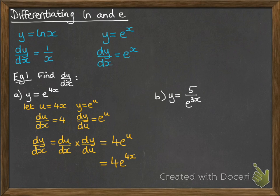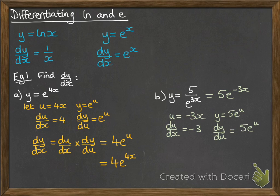We'll do it with another one. So, this is the same as 5e to the minus 3x. So, u equals minus 3x and y equals 5e to the u. Du/dx is minus 3. Dy/du is 5e to the u. And dy/dx is those two multiplied together, which gives us minus 15e to the minus 3x.